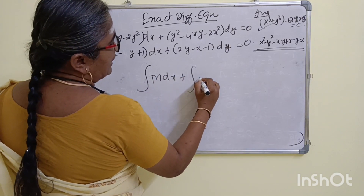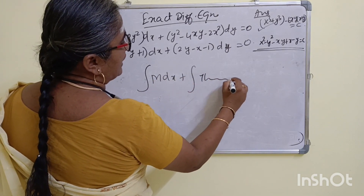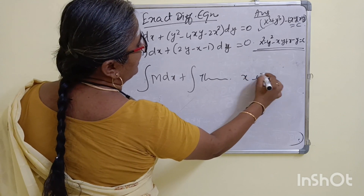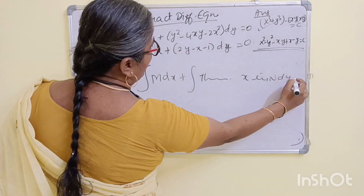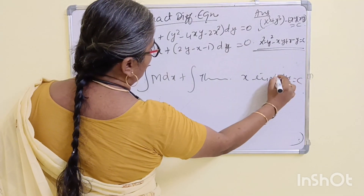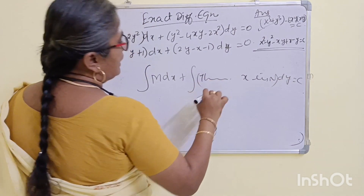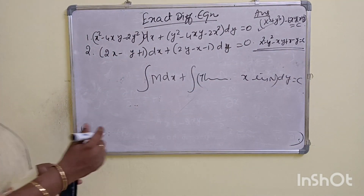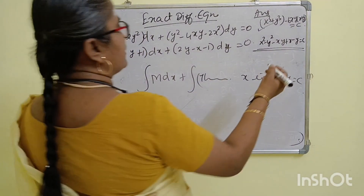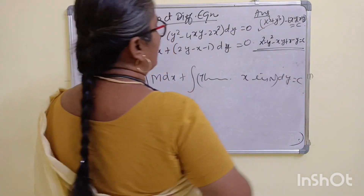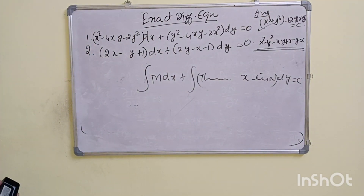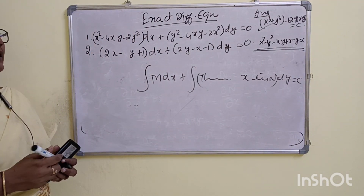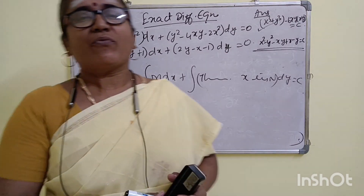The term not containing x in N, dy equal to C. You can see the answer in the comment section. Subscribe to the channel.